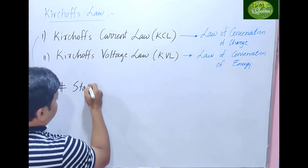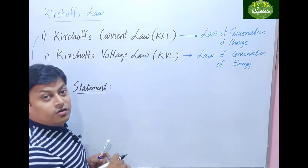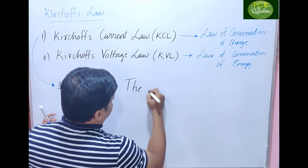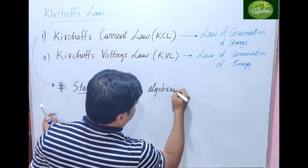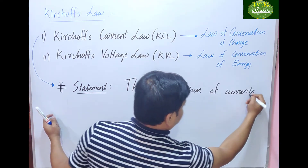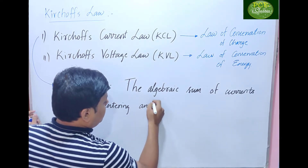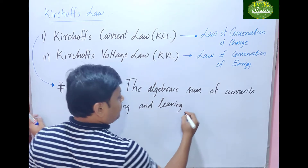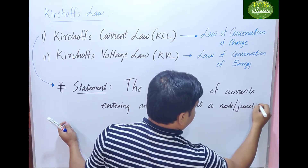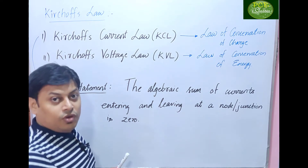Statement of Kirchhoff's Current Law: it states that the algebraic sum of currents entering and leaving at a node or junction is zero.